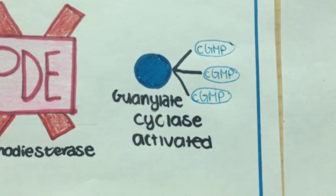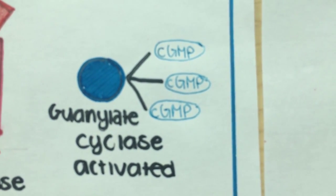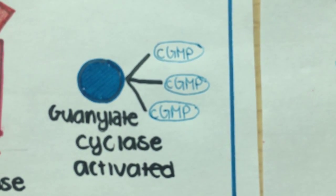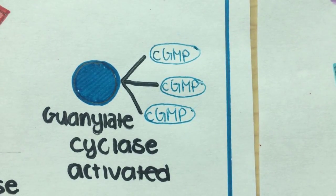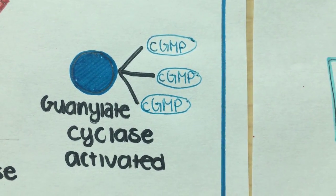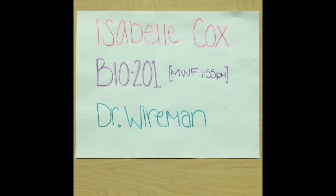Guanylate cyclase is then activated and restores the levels of cyclic GMP and reopens the cyclic GMP-gated channels. Sodium and calcium ions are then able to flow in again.